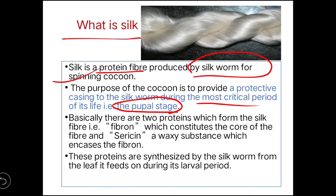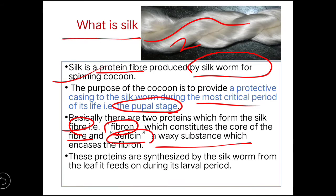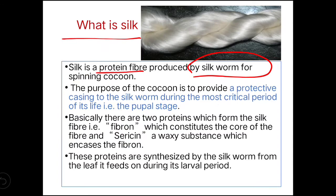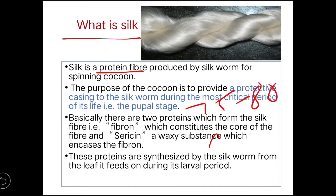There are two proteins that form the silk fiber: fibroin and sericin. Fibroin constitutes the core of the fiber, whereas sericin is the waxy outer substance. These proteins are synthesized by the silkworm from the leaves it feeds on during its larval period. The fibroin percentage is 75–80% and sericin is 20–25%.